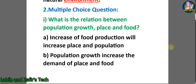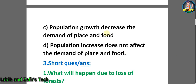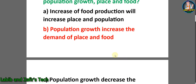Now multiple choice questions. Number one: what is the relation between population growth, place, and food? Option A: increase the food production will increase place and population. Option B: population growth increases the demand of place and food. Option C: population increase does not affect the demand of place and food. The correct answer will be option B.